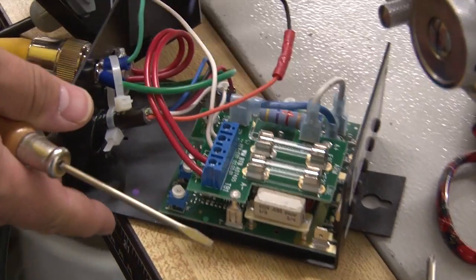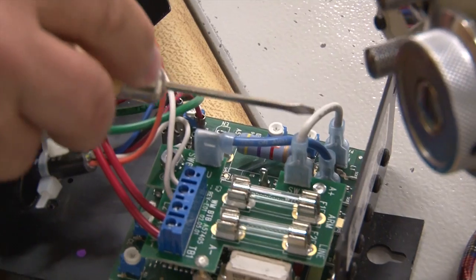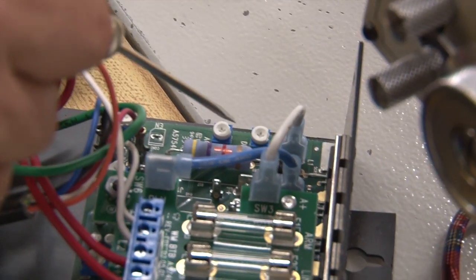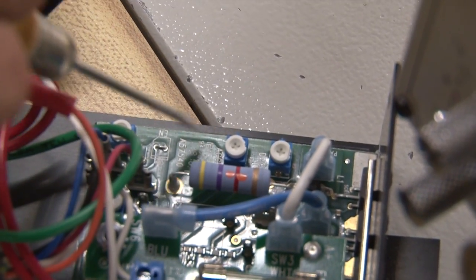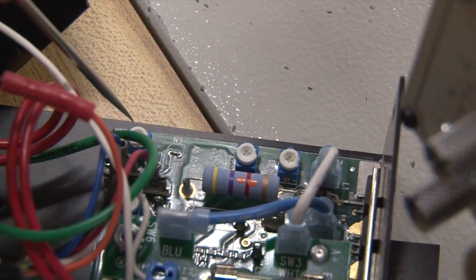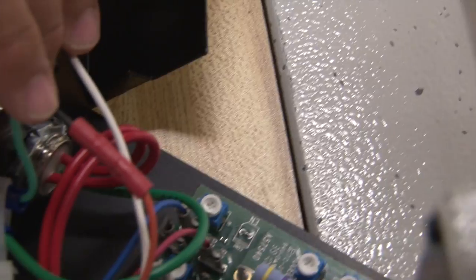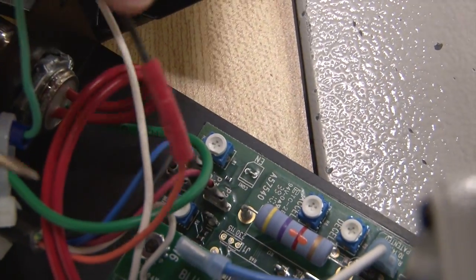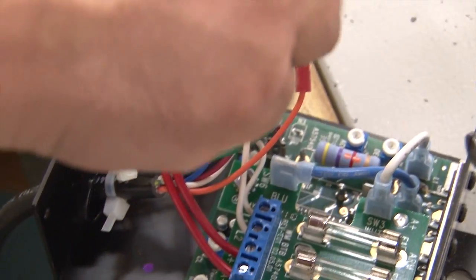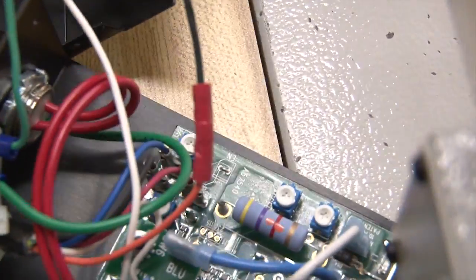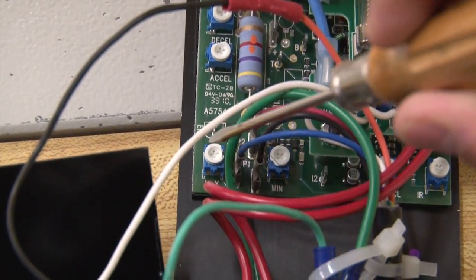And what you want to look at on the control box, these are the pots. This one is clearly labeled decel for deceleration. This one is labeled XL for acceleration. This one is labeled max for maximum speed. And under all of these wires where I'm putting my screwdriver there's another one that's labeled min for minimum speed. Those are the four pots that you want to be concerned with.